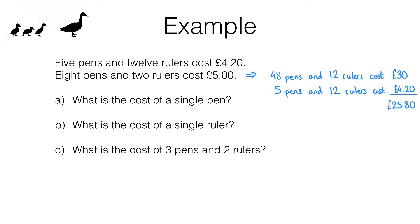What do we get for the extra 25 pounds 80? We don't get any extra rulers—we get 12 rulers in both cases—but what we get is lots of extra pens. We get 48 instead of 5, so that's 43 extra pens. So that means the 43 pens must be worth 25 pounds 80, and that means we can now work out the cost of one pen.